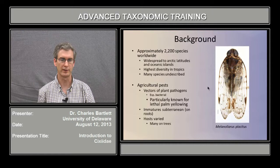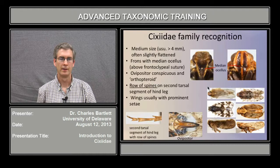They are particularly well known as the vector of lethal palm yellowing in 30 species of palms. They are also important vectors of diseases in strawberry and grape.